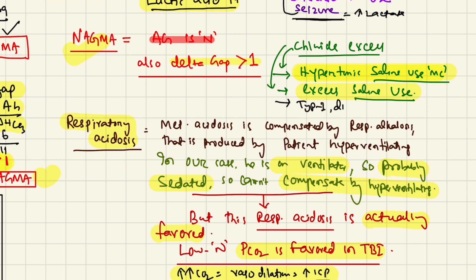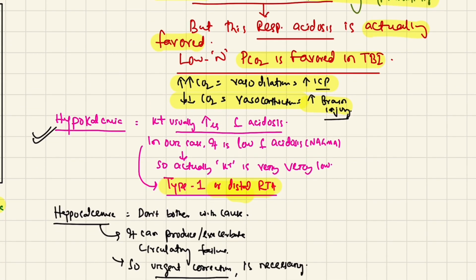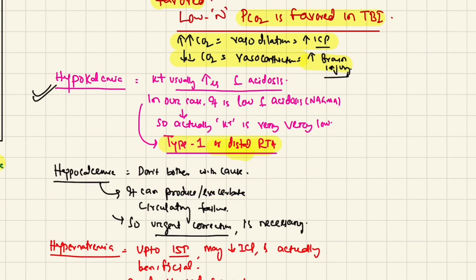Type 1 or distal renal tubular acidosis should be considered here. You have to be very careful when reading an ABG — other parameters can help diagnose something that may influence clinical decisions. The patient also has hypocalcemia, which is important because it can produce or exacerbate circulatory failure. Since our patient is in shock on noradrenaline, urgent correction of hypocalcemia is necessary to improve hemodynamic stability. Don't focus on the cause initially — correct it urgently first.